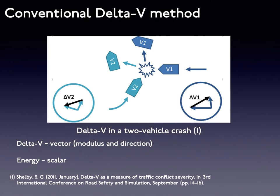Previous studies prefer to use delta-V for the measurement of vehicular crash severity for several decades. Delta-V is computed by the difference between pre- and post-collision speeds. It is a kind of vector including modulus and direction. The fundamental mechanical meaning of delta-V is related to the forces that occupants receive inside of the crashing vehicles. In reaction to the imposed force after the collision, occupants strike the surfaces in the front of the vehicle, which is the main reason for injuries in most cases.